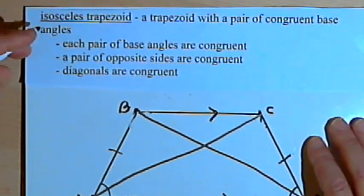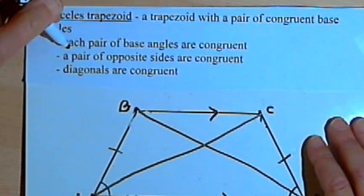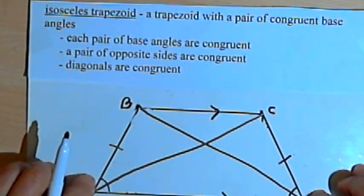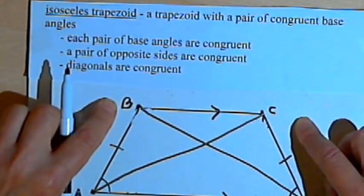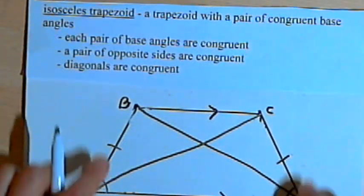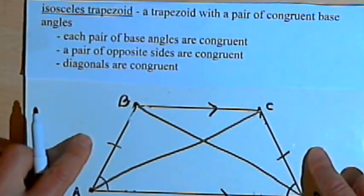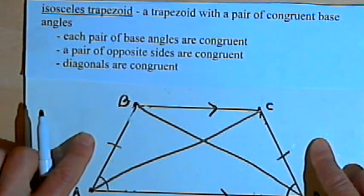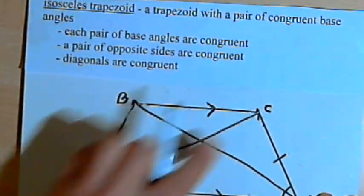So those are your three properties for isosceles trapezoids. Both pairs of base angles are congruent — A and D were congruent, B and C were congruent. There's a pair of congruent opposite sides, and the diagonals are congruent.